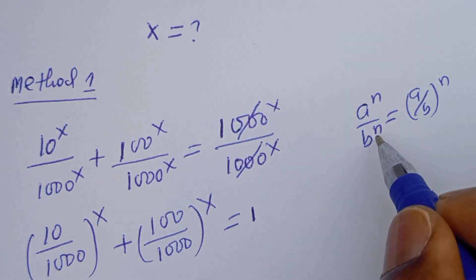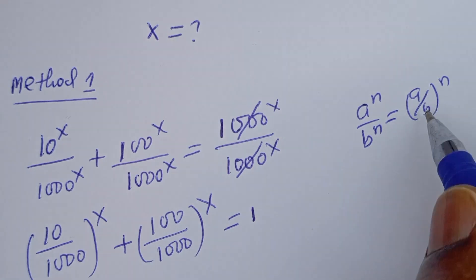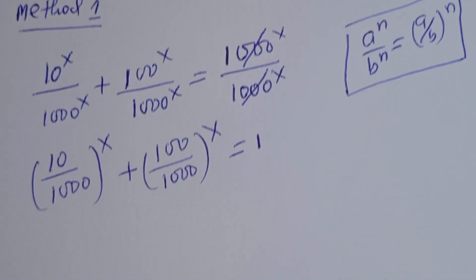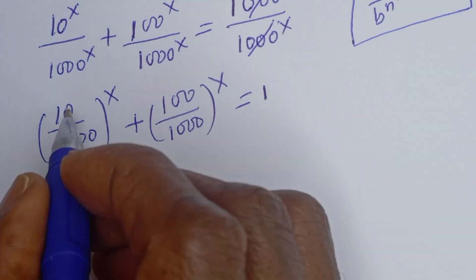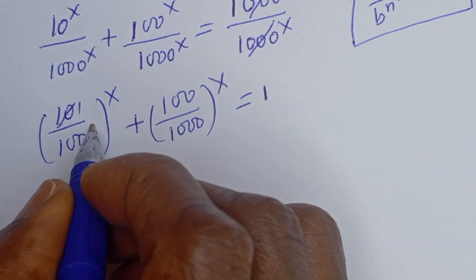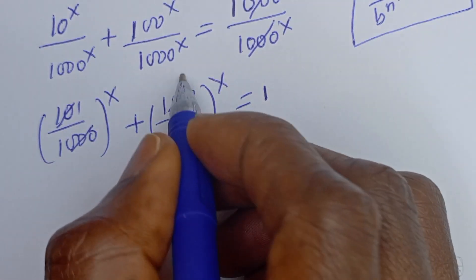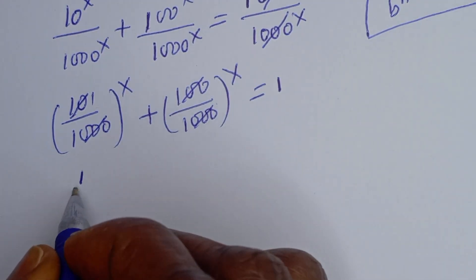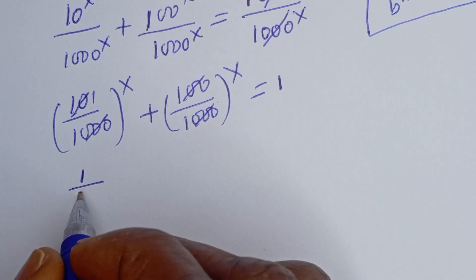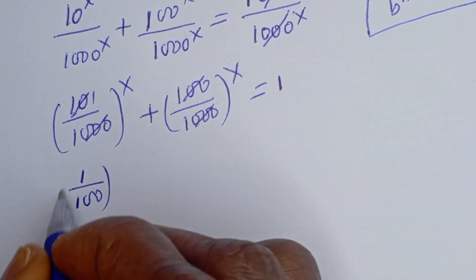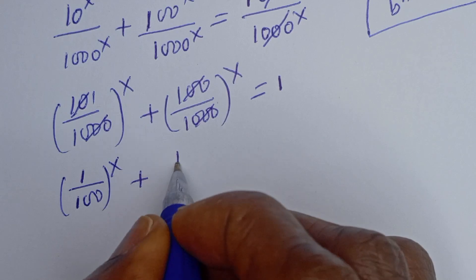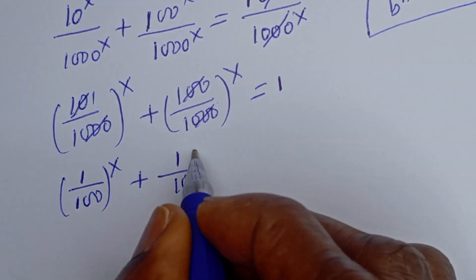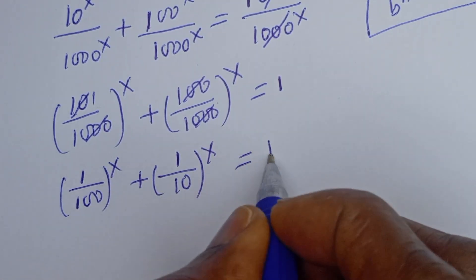If you have A to the power of N divided by B to the power of N, this is equal to A over B, to the power of N. Applying this rule: 10 over 1000 is 1 over 100, and 100 over 1000 is 1 over 10. So we have (1/100) to the power of S plus (1/10) to the power of S is equal to 1.